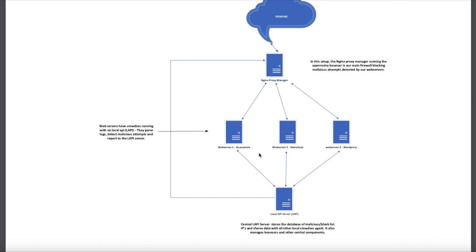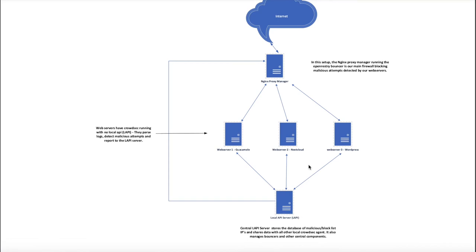Now that you have a basic understanding of how the CrowdSec multi-server installation works, we're going to set this up in our lab. Before we begin, you need to decide where to host your local API server. I advise creating a separate VM with Ubuntu, but for this tutorial it is also acceptable to use your Nginx Proxy Manager machine as your local API server.